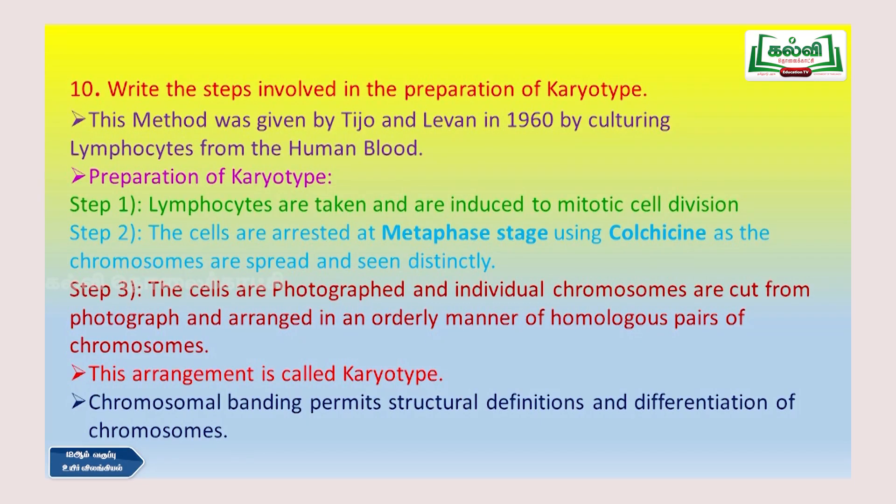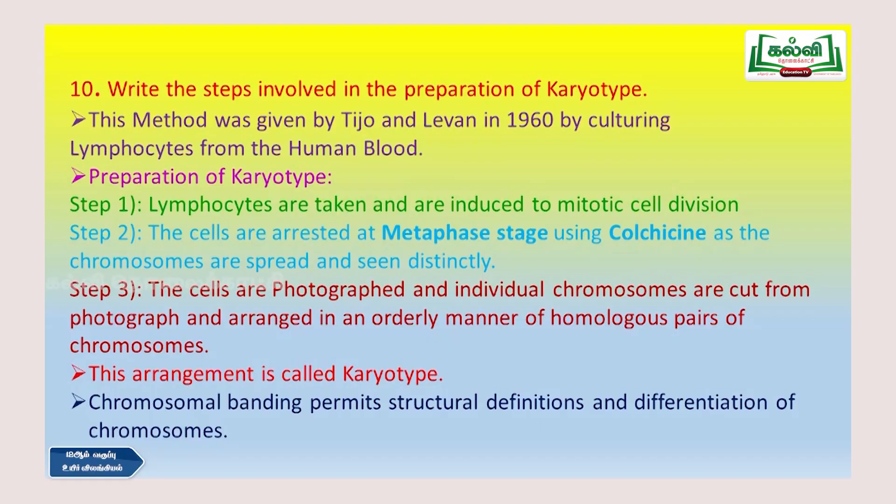This is a 3-mark question already given in paragraph form, so you just have to convert it into steps and write it. This method was given by Tijo and Levan in 1960 by culturing lymphocytes from human blood. The first step is that lymphocytes are taken and then they are induced into mitotic division.